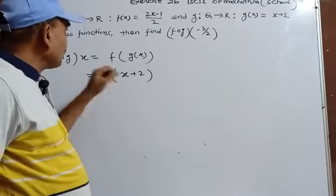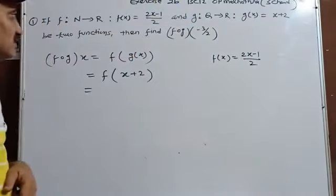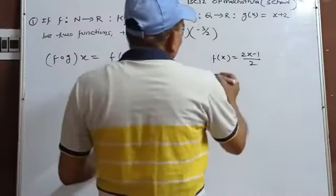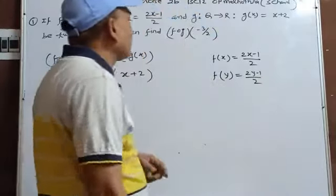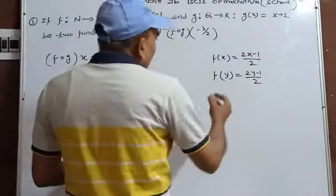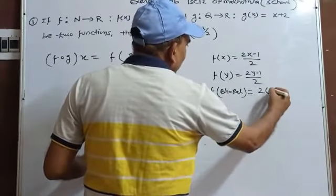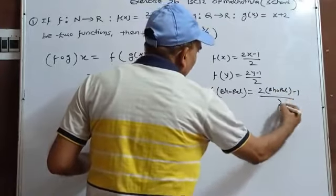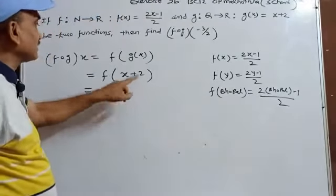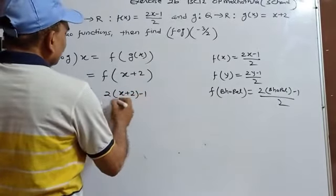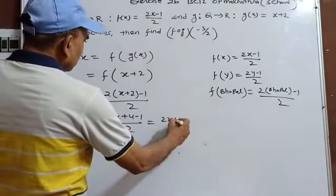Since g(x) = x+2, we compute f(x+2). Given f(x) = (2x-1)/2, substituting x+2 in place of x gives f(x+2) = (2(x+2)-1)/2 = (2x+4-1)/2 = (2x+3)/2. So fog(x) = (2x+3)/2.